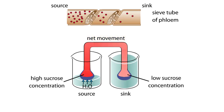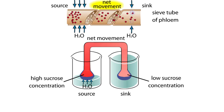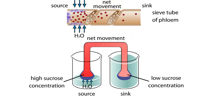Now consider a sieve tube that contains a high concentration of sucrose at one end and a low concentration at the other. Water initially flows by osmosis into both ends, but flows much more abundantly into the source end. This incoming water at the source end pushes the sucrose solution through the tube.